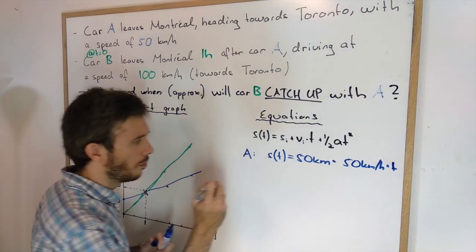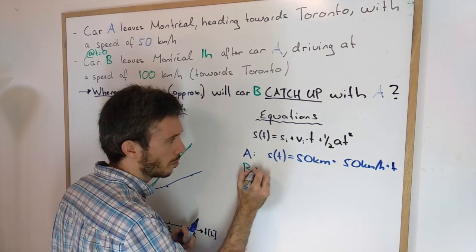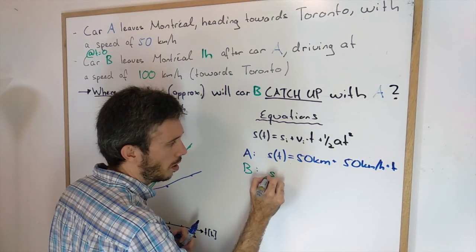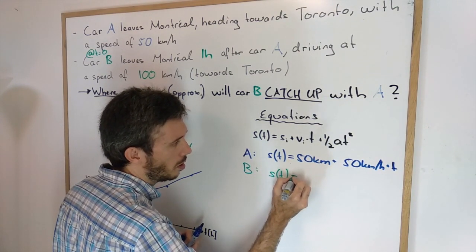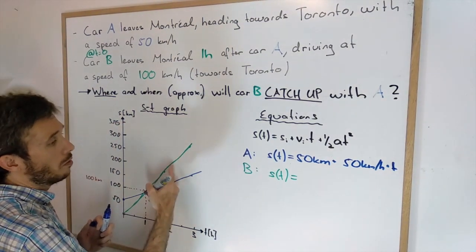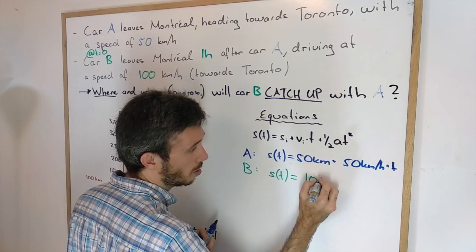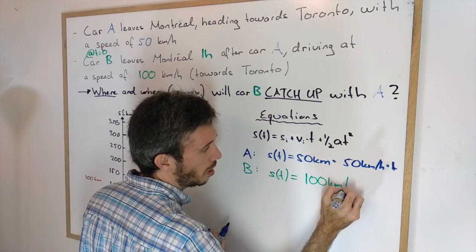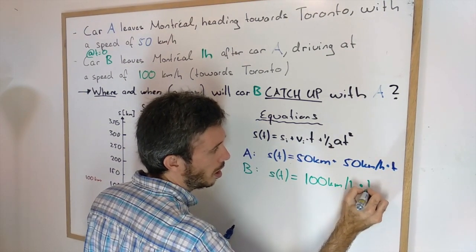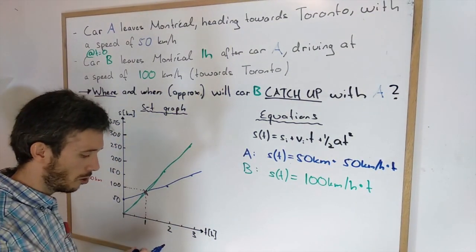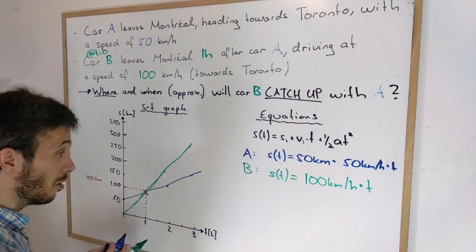Car B, S as a function of time, is where it was initially, 0 km, plus v initial times time, so 100 km per hour times time. Also we are ignoring acceleration, traffic, etc.